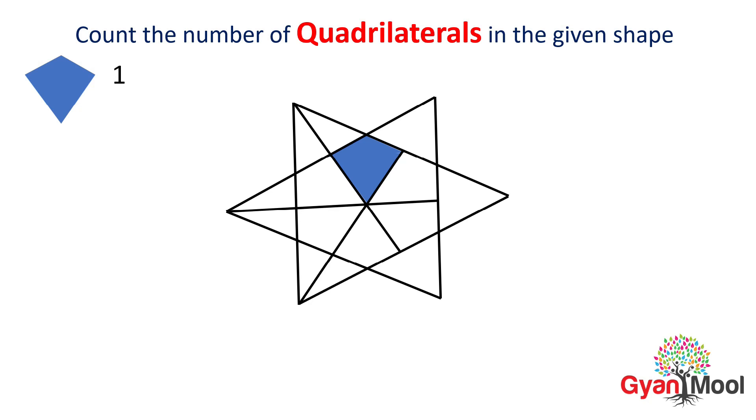So first we will count the shown blue quadrilaterals. These are 1, 2, 3, 4, 5 and 6.